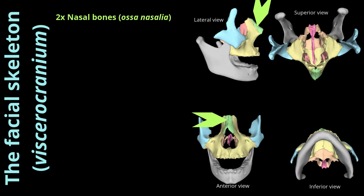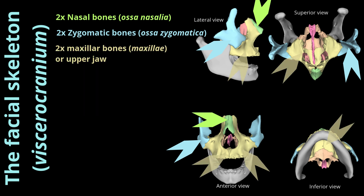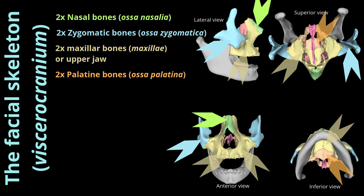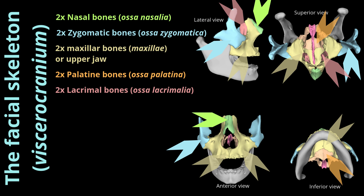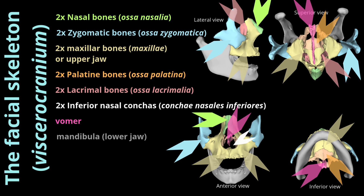The facial skeleton (viscerocranium) is made up of 13 bones which include: two nasal bones (ossa nasalia), two zygomatic bones (ossa zygomatica), two maxilla bones, two palatine bones (ossa palatina), two lacrimal bones (ossa lacrimalia), two inferior nasal conchae (conchae nasales inferiores), and the vomer. Finally, we have the mandible (lower jaw), which is technically not part of the viscerocranium, however is sometimes still counted as such by some texts. We should also mention the three ossiculi auditus of the middle ear. Its main task is the protection and support for all of the facial structures.